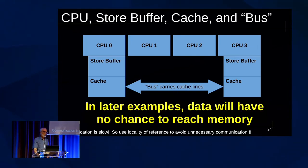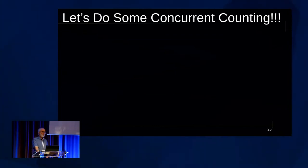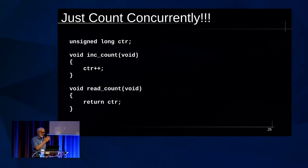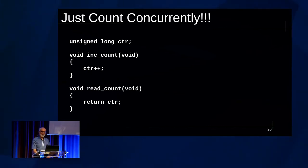In our examples, the data isn't going to have any chance to make it to memory, so we'll leave that part out and just have the bus carrying lines around. So let's do some concurrent counting — who's ready to count? We just count: we add and return the counter. We have an unsigned long counter. If we had a signed counter, we'd have undefined behavior when we wrapped or overflowed. Would anybody care to critique this code?